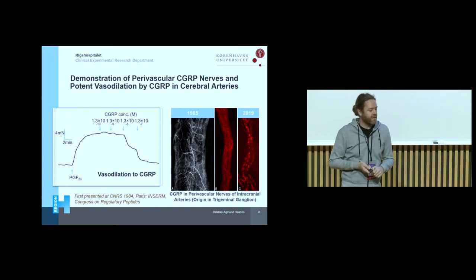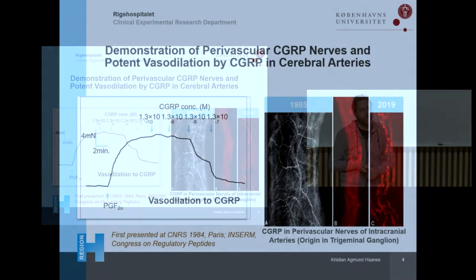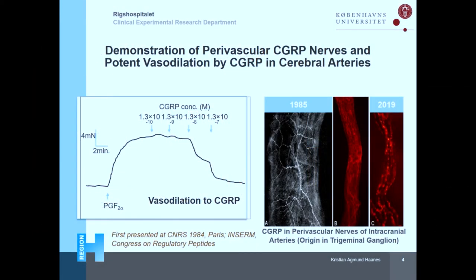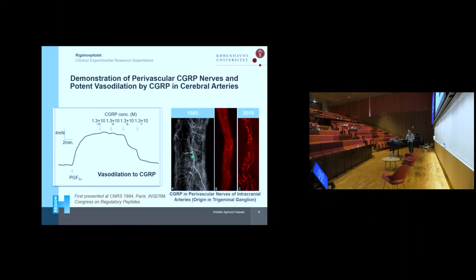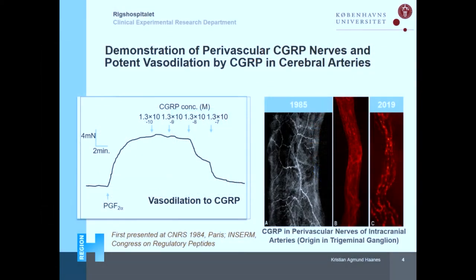Maybe one of the most interesting, and the one that triggered a lot of the research and the medicines we have today in migraine, is CGRP. When CGRP was first discovered, it was seen to cause vasodilation of the arteries. You have some arteries that you pre-constrict with PGF2-alpha, and when you add CGRP, you can see the artery is vasodilated. Also, CGRP peptide stays in the sensory fibers near the artery — from original data by Lars Edvinsson. CGRP matched very well with the vascular hypothesis to begin with.